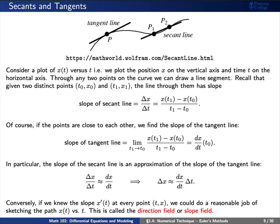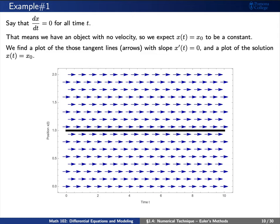Conversely, if we knew the slope at every point t, x, then we can do a reasonable job of sketching the path as a function of time. This is the concept of a slope field. Let's discuss a few examples.